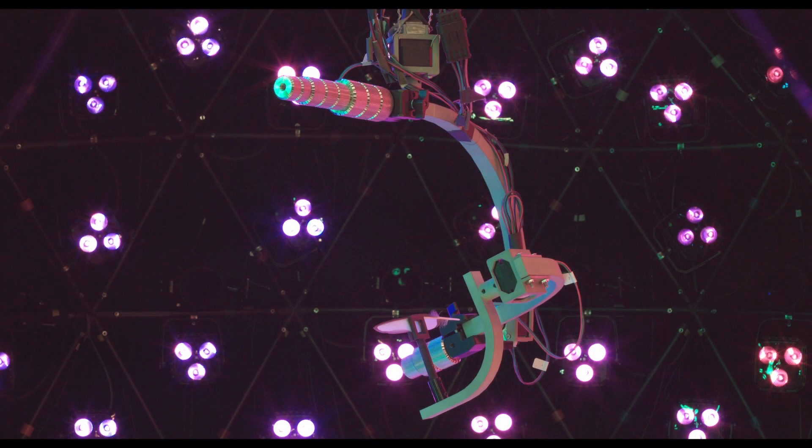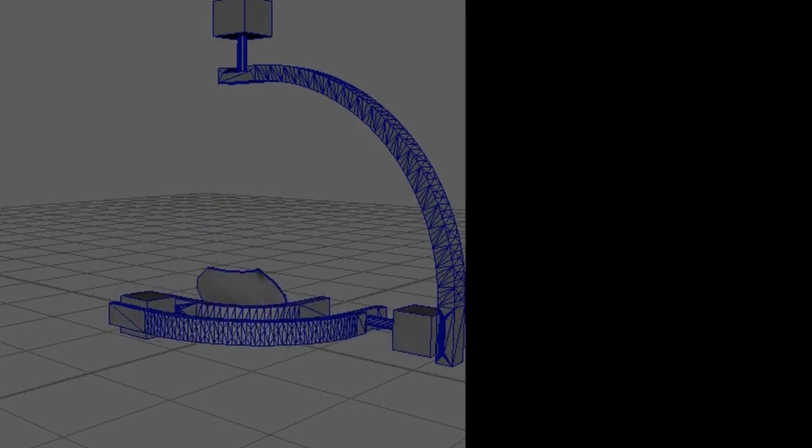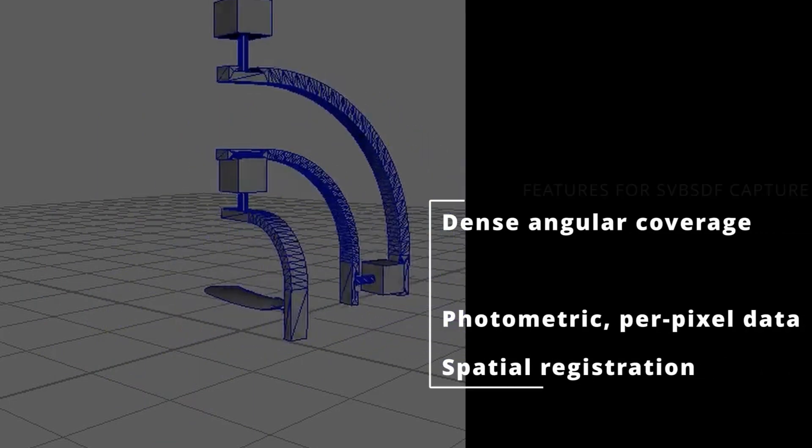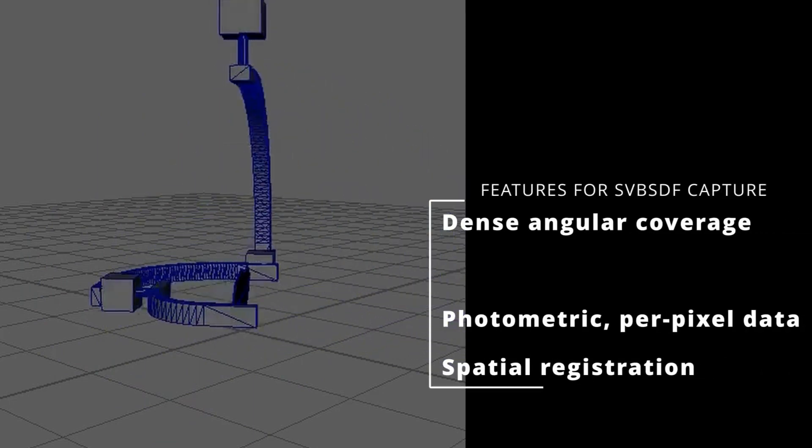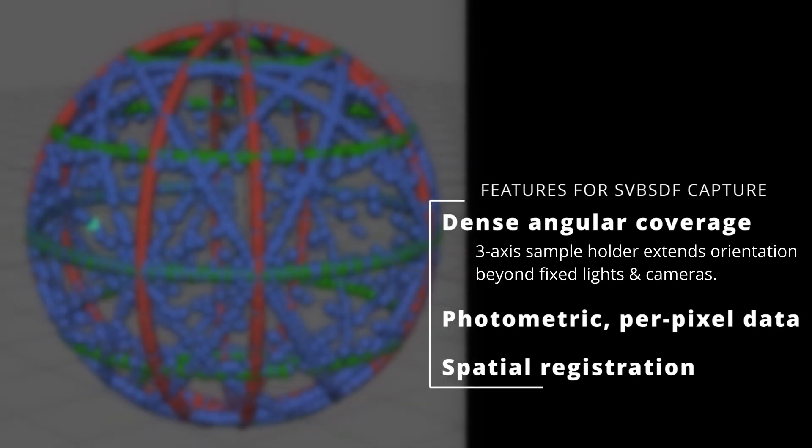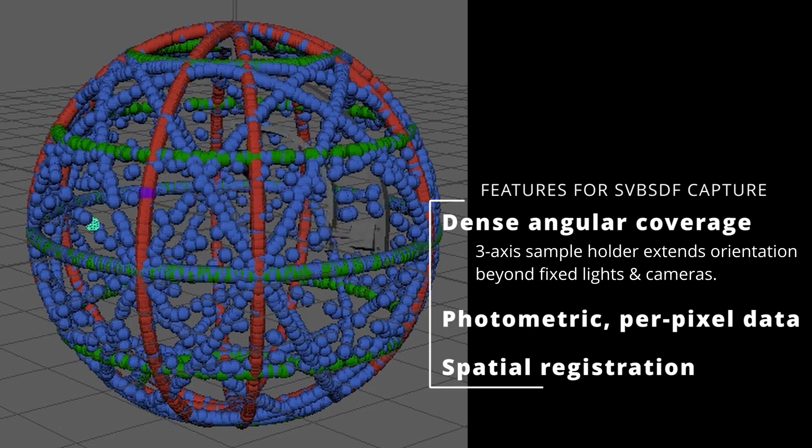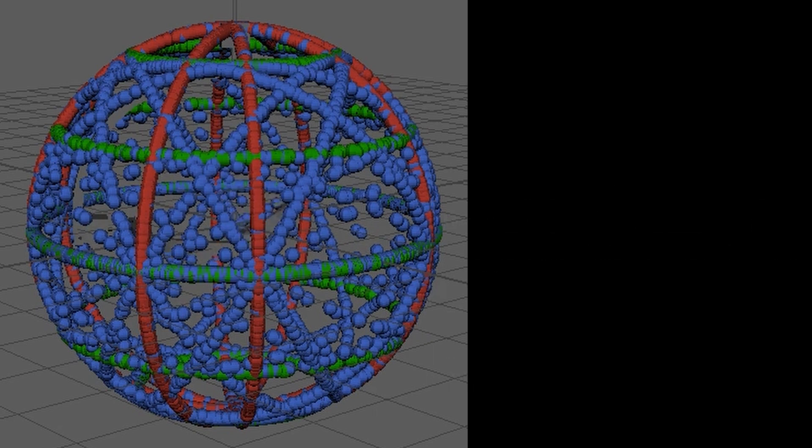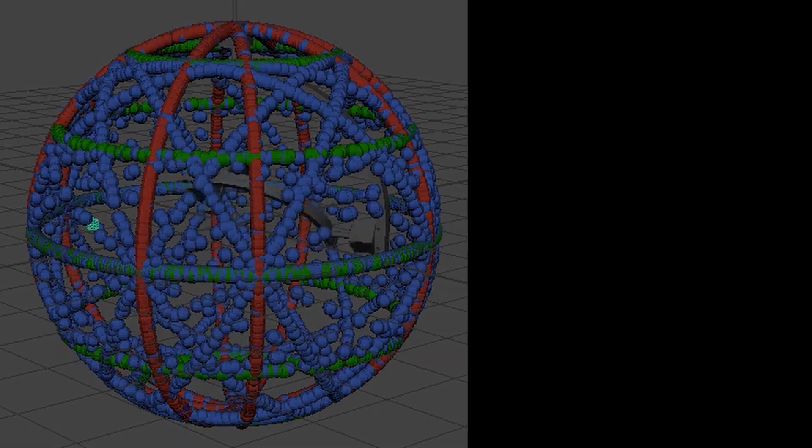The system is used for SVBSDF capture in particular due to having detailed angular coverage and lighting and viewing directions with little obstruction because of the stage design, which is necessary for appearance capture. Having a photograph-based approach that provides per-pixel material data. And registering spatial location across sample surfaces with the aid of tracking the sample holder, which is enhanced potentially by the use of normal maps and multi-view stereo.